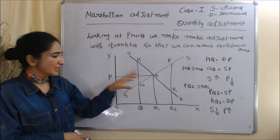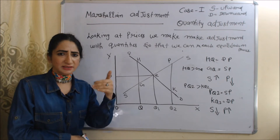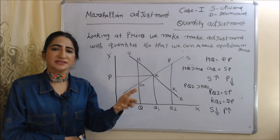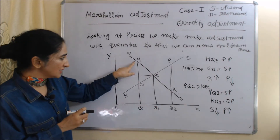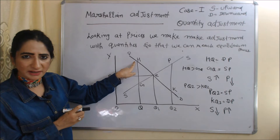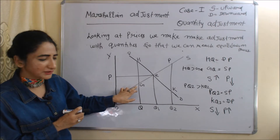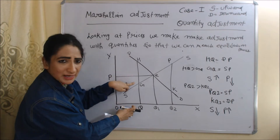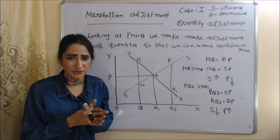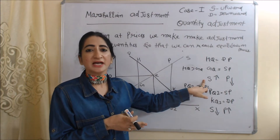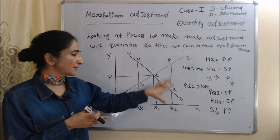In this diagram, the X-axis has quantities and the Y-axis has prices. DD is the demand curve and SS is the supply curve. E is our equilibrium point and OP is our equilibrium price. Now suppose demand price is more than supply price — HQ is the demand price (H touches the demand curve) and GQ is the supply price (G touches the supply curve). When demand price exceeds supply price, consumers are willing to pay more than we are charging — this is a good opportunity for producers, so they will increase supply, prices will fall, and we ultimately reach equilibrium.